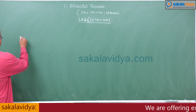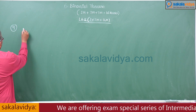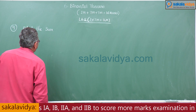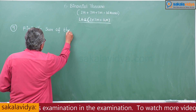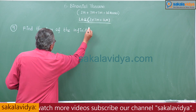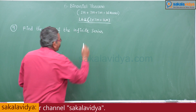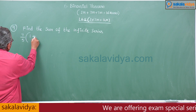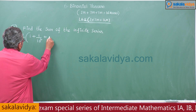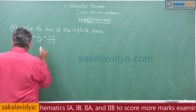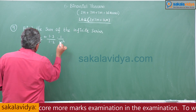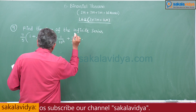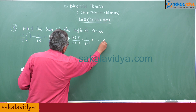Problem 9: find the sum of the infinite series 7/5 times (1 + 1/10² + (1·3)/(10⁴) + (1·3·5)/(1·2·3)·(1/10⁶) + ... to infinity).